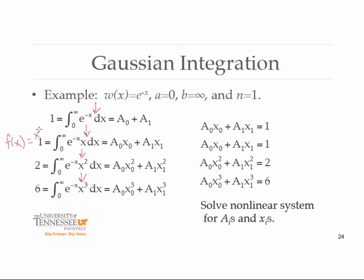We don't know what a0, a1, x0, or x1 are. You may ask why it's nonlinear — because the equations involve powers of the unknowns x0 and x1 beyond degree 1. It has four equations and four unknowns. But we can solve it. When we do, we will have generated a quadrature rule that is exact when the weight function is e to the minus x, integrating from 0 to infinity. As long as you can get an analytical representation, you can create quadrature rules as sophisticated as you want.